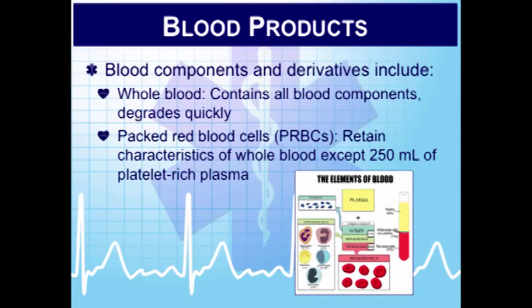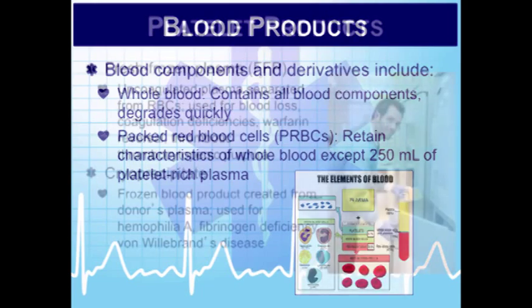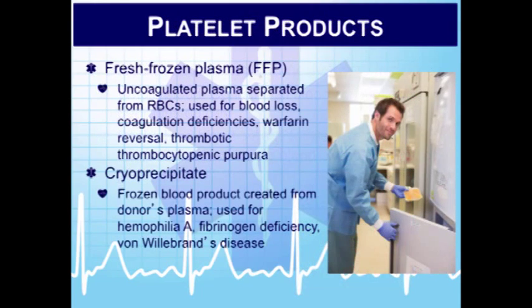Packed red blood cells have all the characteristics of whole blood except about 250 mL of platelet-rich plasma is extracted, so the patient receives the same amount of RBCs as in whole blood but with less fluid. This makes PRBCs ideal for patients at risk of fluid overloading.